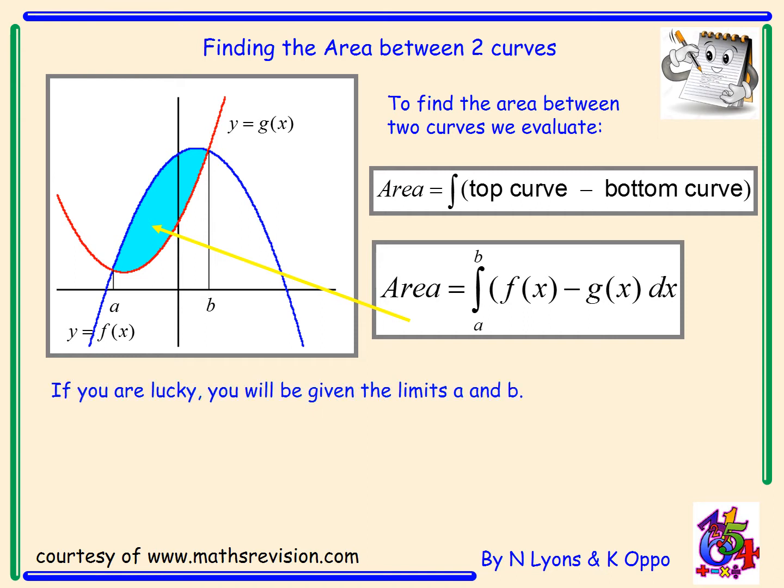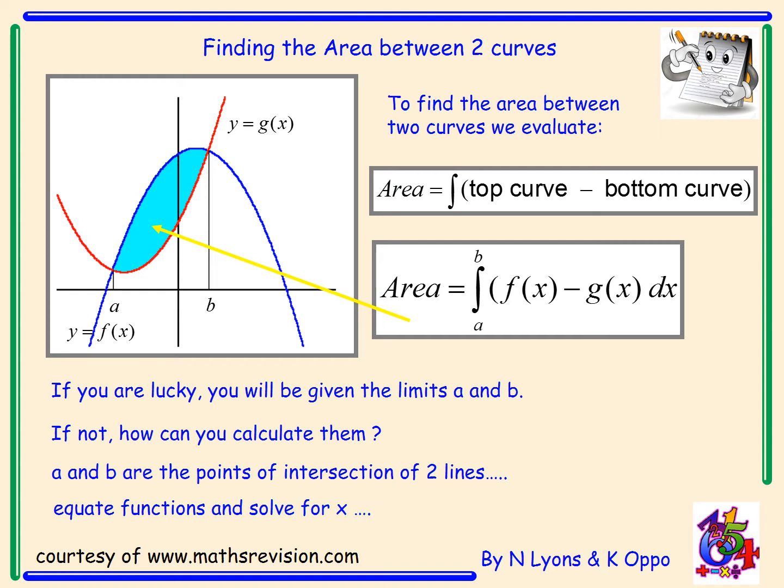If you're lucky, you'll be given the limits a and b. If not, how can you calculate them? Well, I said to you the a and b are the points of intersection of two lines. Now we've seen that previously in our straight line section of the course. We equate the functions and solve for x.